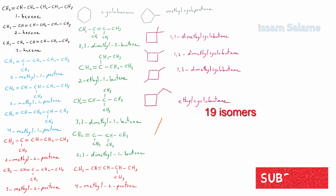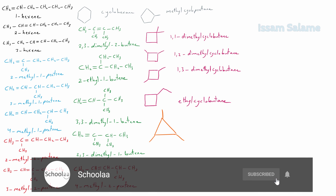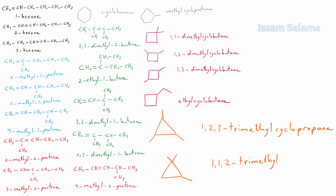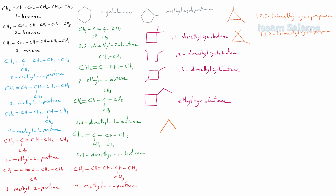Finally, let's draw isomers of cyclopropane. With three methyl groups at different carbons, the name is 1,2,3-trimethylcyclopropane. With two methyls at one carbon and one methyl at the second, the name is 1,1,2-trimethylcyclopropane. With one ethyl and one methyl joined to two different carbons, the name is 1-ethyl-2-methylcyclopropane.